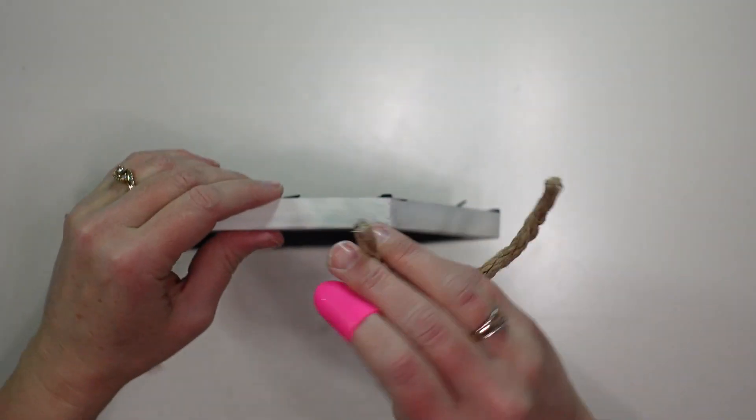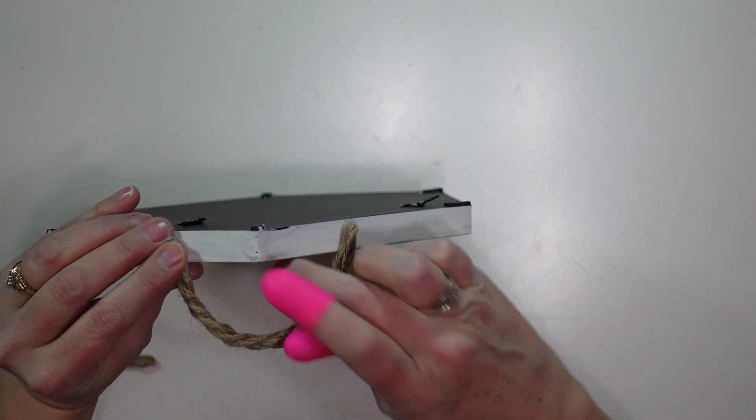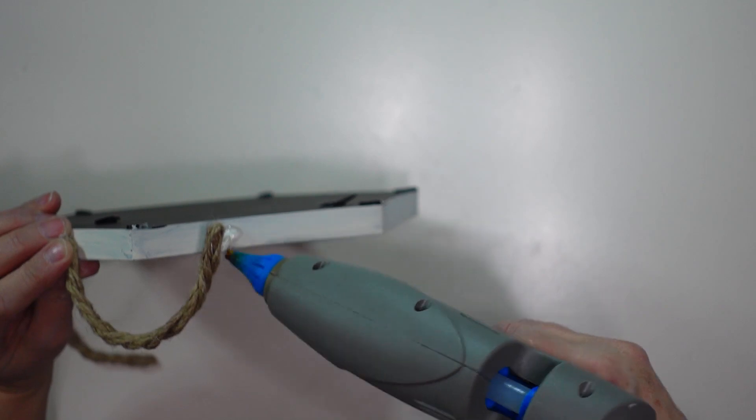Then using my Gorilla Hot Glue I am going to attach the handles straight across from each other on the outside of the frame.